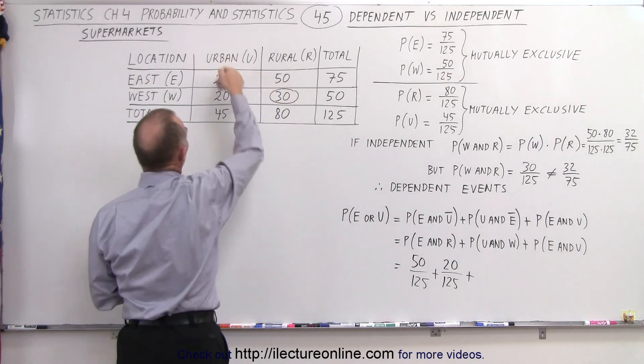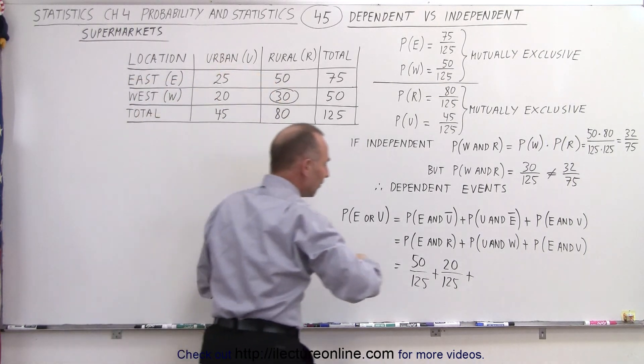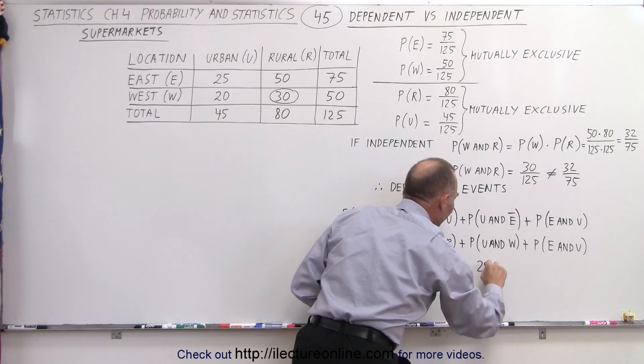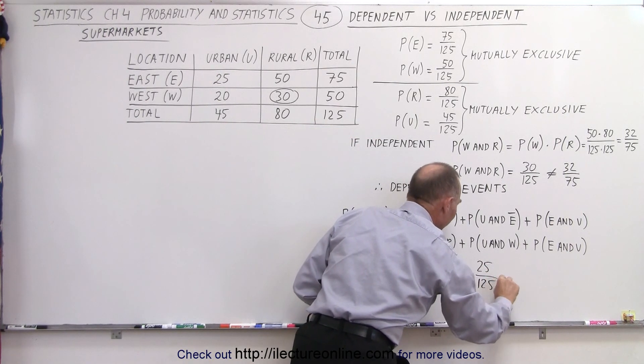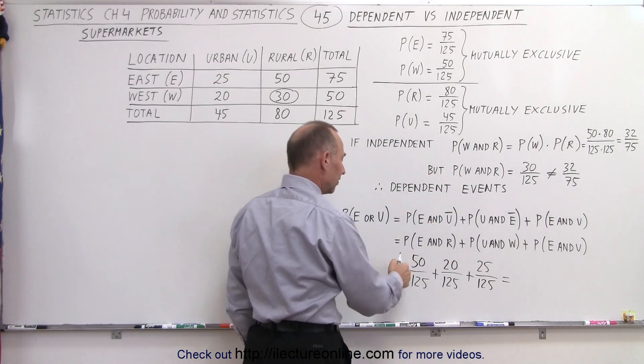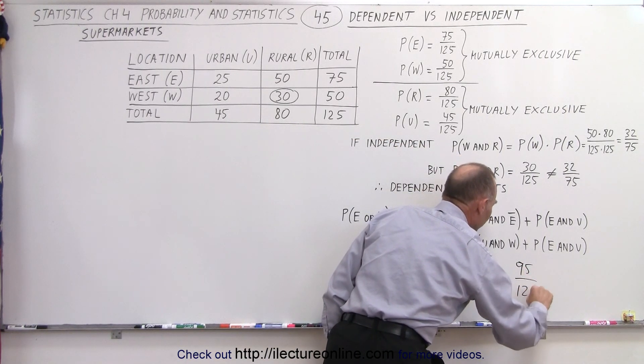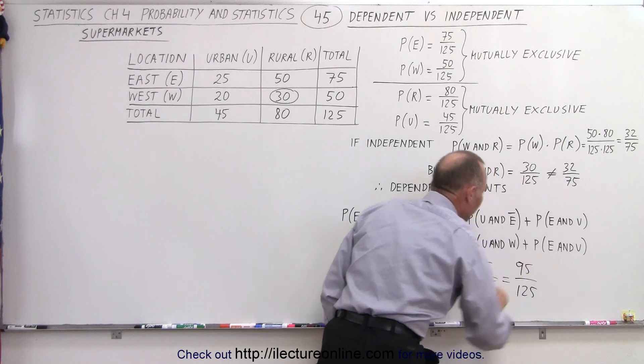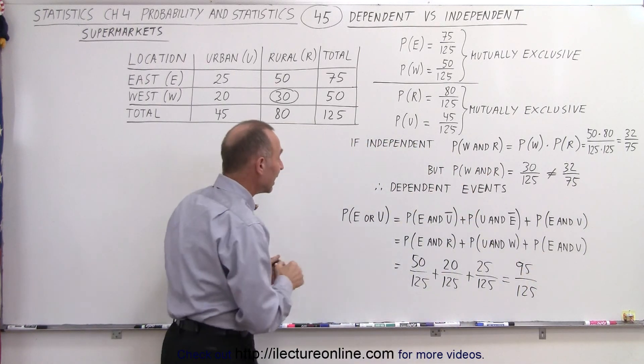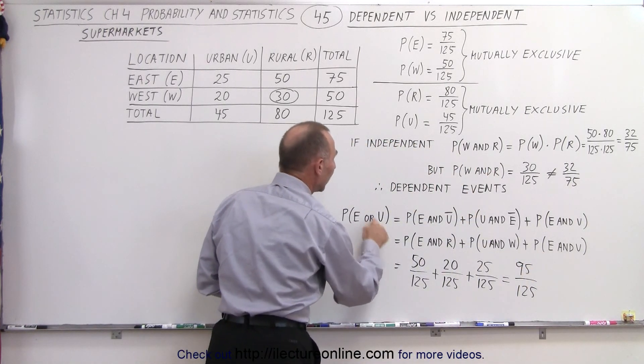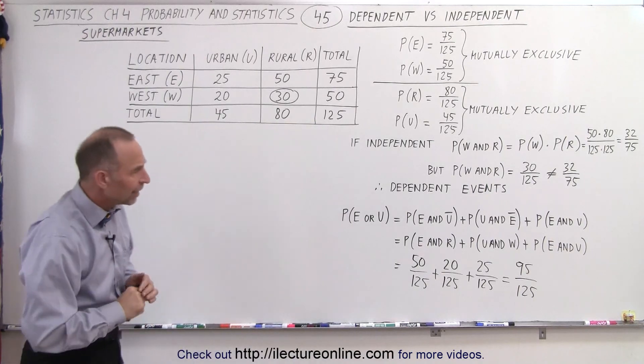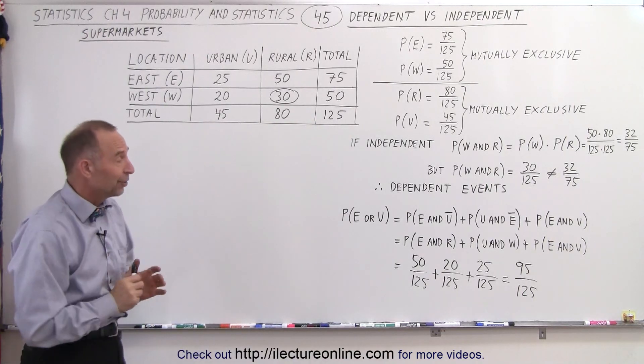So here we have east and there we have urban, that would be 25, so plus 25 over 125. And if we add all those together we have 70 plus 25 which is 95 over 125. And so this is the probability that you'll find the supermarket either in the east or in an urban setting, and that is how it's done.